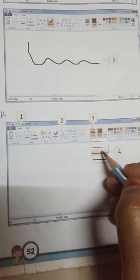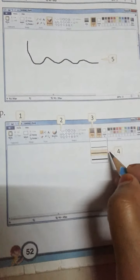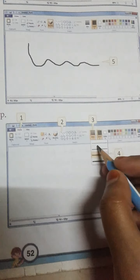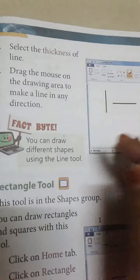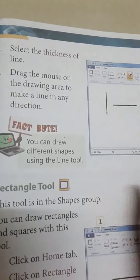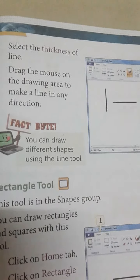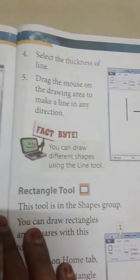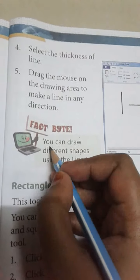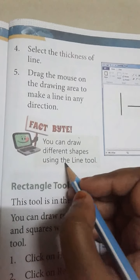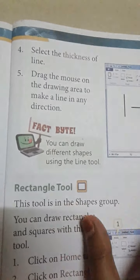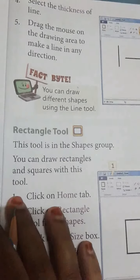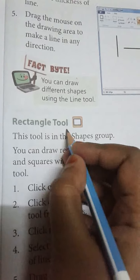Then we will select the thickness. After selecting the thickness, we will draw the line in any direction. We will drag the mouse to draw the line.